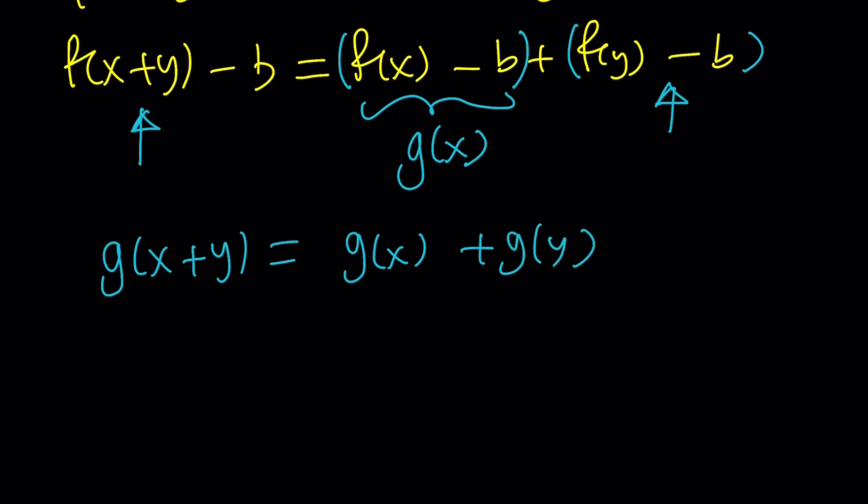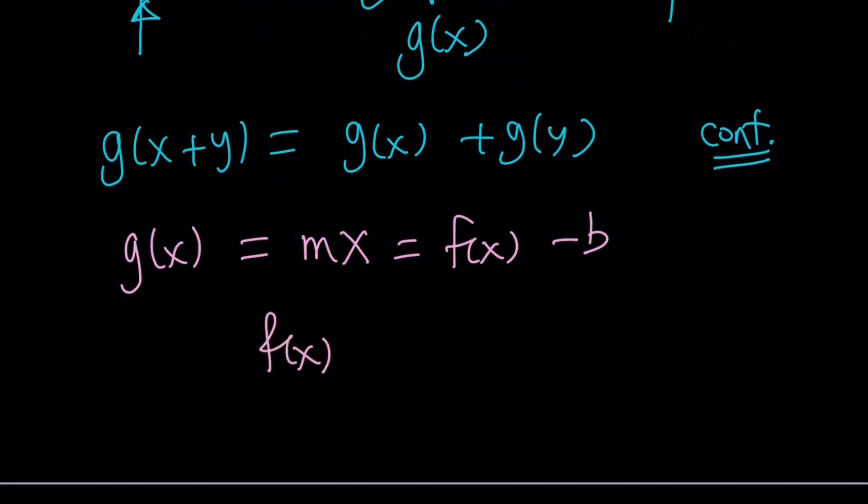Remember, g(x) is continuous. Therefore, it satisfies Cauchy's functional equation. In other words, g(x) can be written as mx where m is a constant. Any linear equation that goes through the origin will satisfy this. But g(x) is also equal to f(x) - b. Remember, our goal is to solve for f(x). From here, f(x) can be written as mx plus b. That looks familiar and linear, doesn't it?